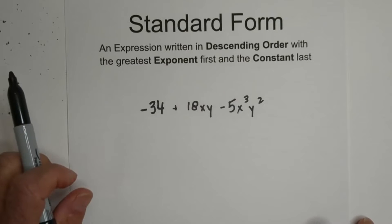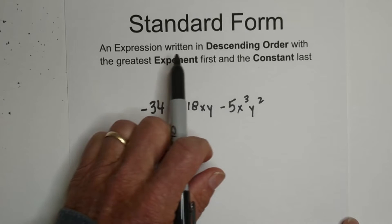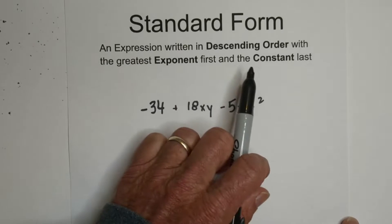Welcome to Moving Math and Science. In this video, let's go over moving an expression to standard form. Basically, it's in standard form when an expression is written in descending order with the greatest exponent first and the constant last. So it's not the degree, it's the exponent.